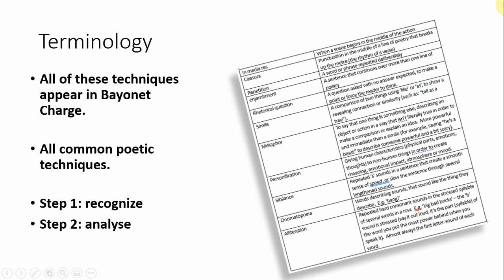To give some more concrete examples of terminology, your principal worksheet has a list of techniques, all of which appear in Bayonet Charge. On the left-hand column, this is the terminology that describes the techniques, and that's their descriptions. So, if I were to say the poem begins in media res, I am using a piece of technical English terminology. These are all common poetic techniques, so knowing these will let you identify and talk about them in any poem you come across. They are not exclusive to Bayonet Charge.